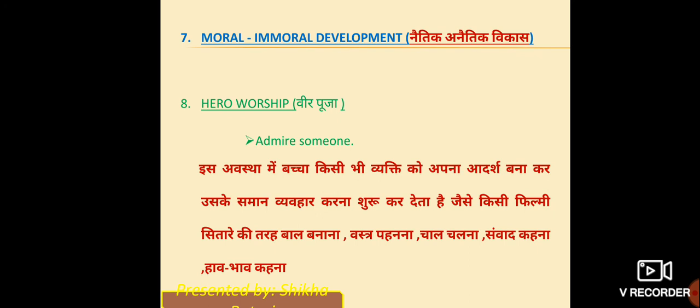The seventh point is moral-immoral development — ethic-unethic vikas. The adolescent can identify situations as right or wrong, and uses logical reasoning. This is also why they have arguments with their parents — they argue from their own logical level.